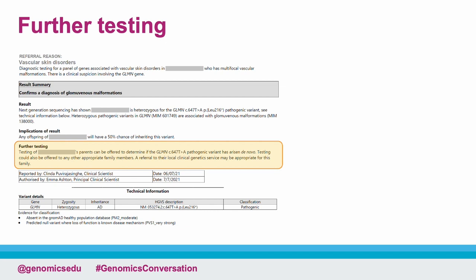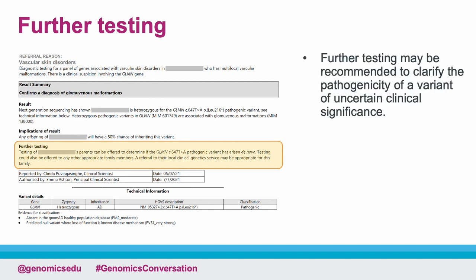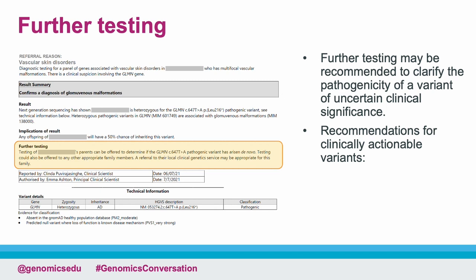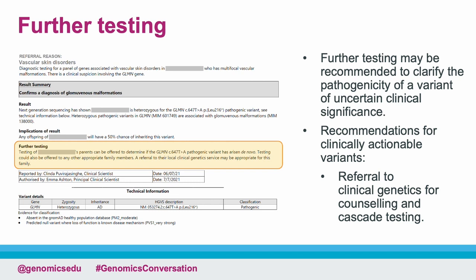The next section highlights if any further testing is recommended. As a clinician, it's important to look at this section to see if any follow-up actions are required. For example, if a variant of uncertain significance has been identified where the evidence just falls short of a classification of likely pathogenic, the report may suggest further testing to aid a more definitive classification. This could include testing parents to see if the variant has arisen de novo, or if there's a strong family history, testing other affected relatives to see if the variant is segregating within the family, or RNA studies to assess variants that may affect splicing. Where a clearly causative variant has been identified, this section would recommend referral to the local clinical genetic service for counselling and cascade testing in the wider family.